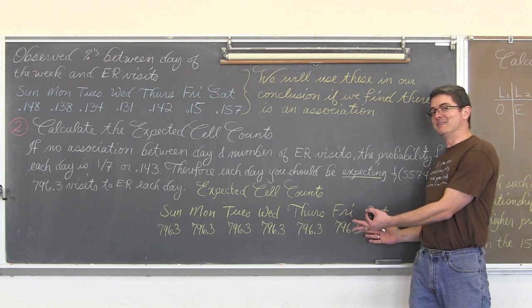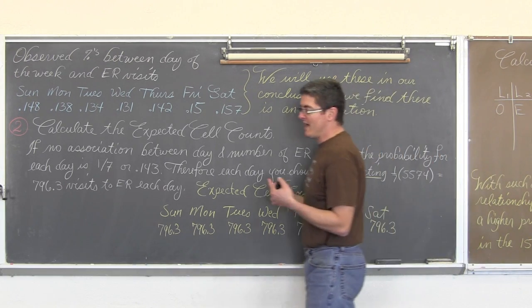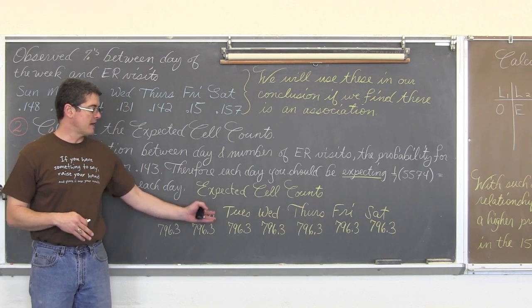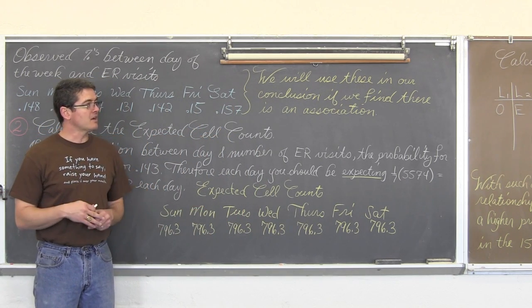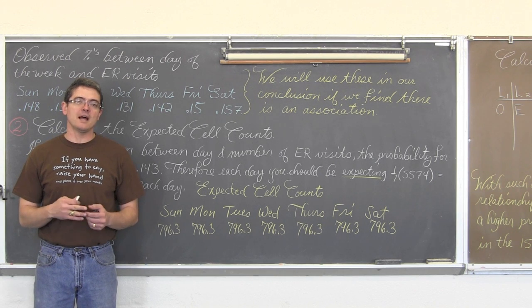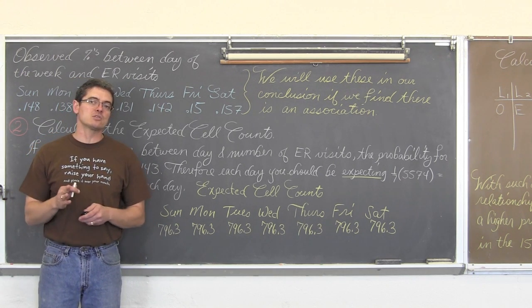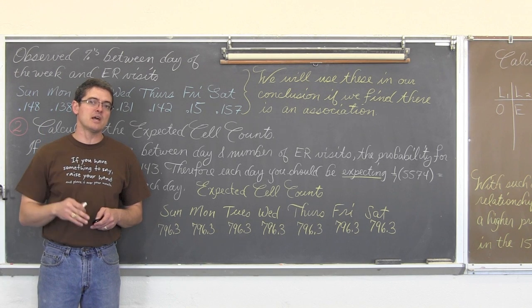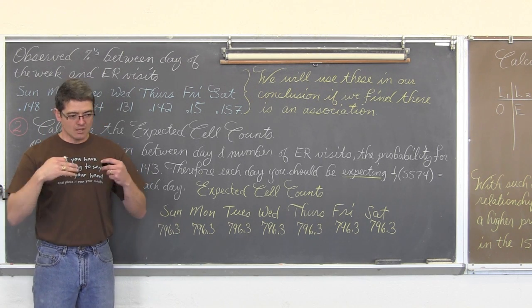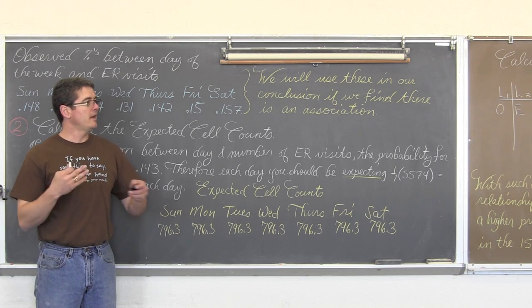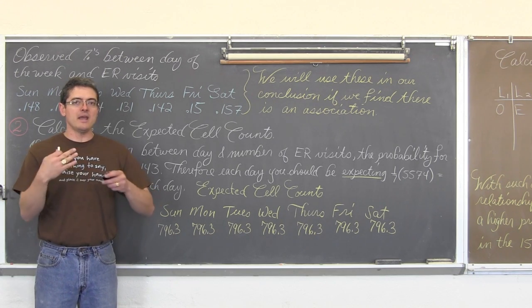So the expected cell count for every one of the seven days of the week is that same value of 796.3. Thus I have written it. So we have our observed count values. We have our expected count values. Let's actually run through the formula of calculating the chi-square statistic and make sure that we do include the condition check and draw a conclusion based on the observed p-value and H sub 0 and H sub a.